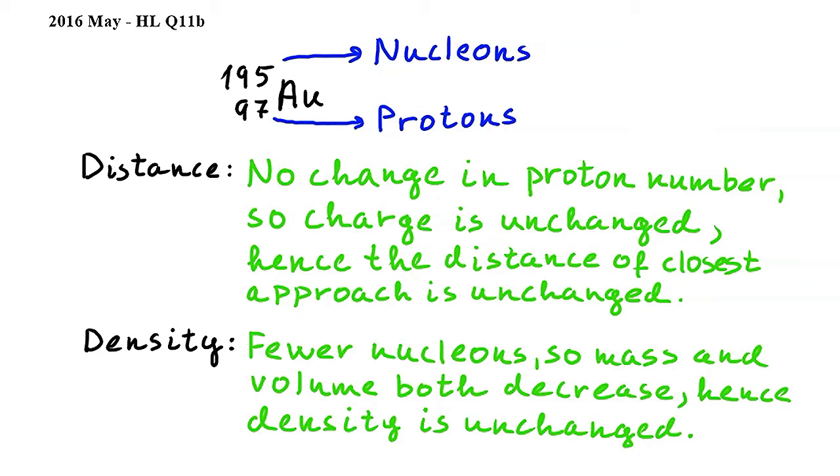In this question we have to explain what happens to the distance of closest approach and to nuclear density when the original gold nucleus is replaced by one of its isotopes.